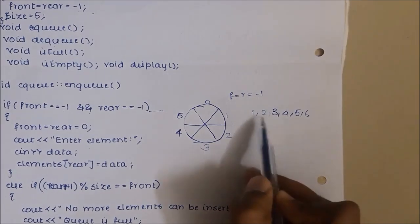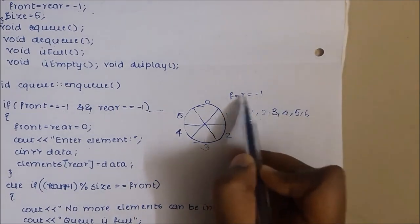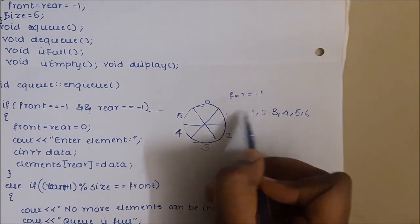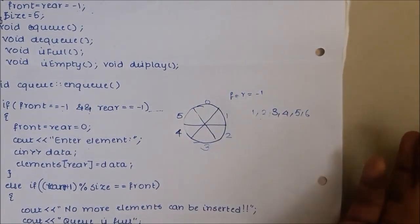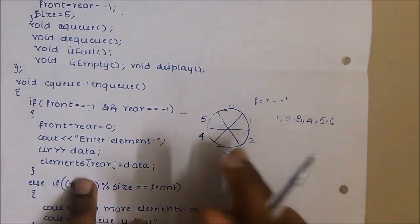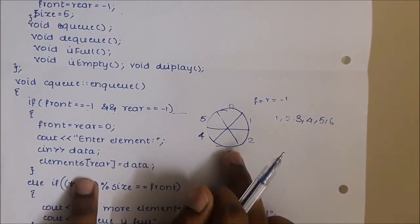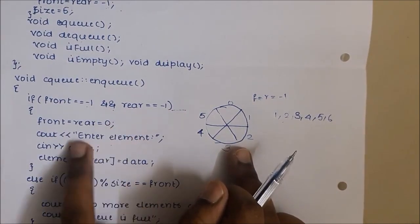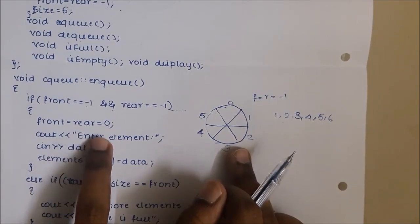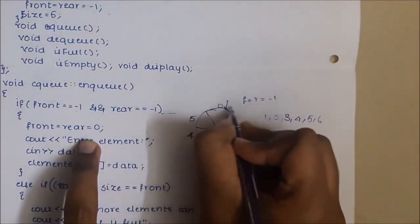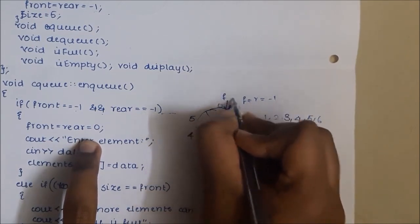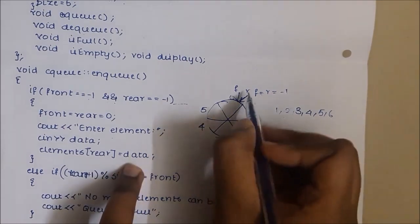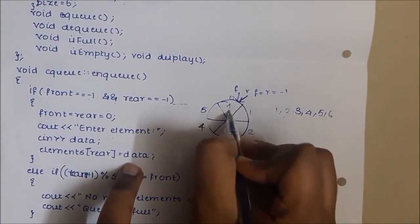Initially front and rear point to minus 1. When inserting the first element 1, the queue is empty, so the condition is satisfied. Front and rear are set to 0, and elements[rear] = data stores 1 at index 0. Front and rear are now pointing to index 0.